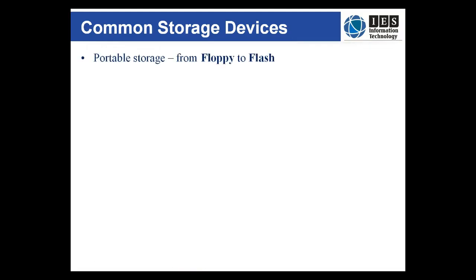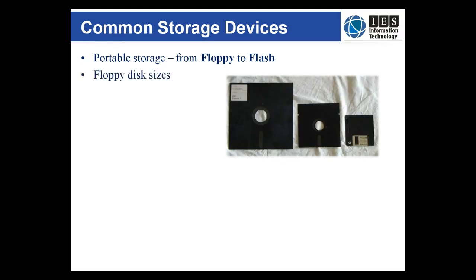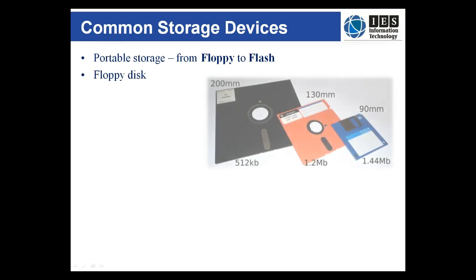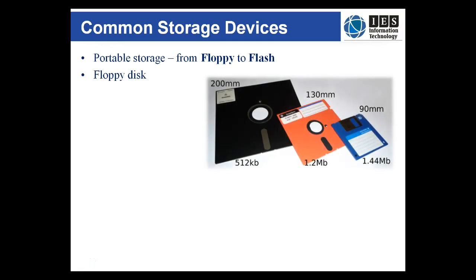1999 saw the demise of the floppy disk. The floppy disk was developed as an inexpensive way to load data into a computer. The first floppy, introduced in 1971, was 20 centimeters squared and held only 80 kilobytes of data.